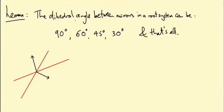Okay, I'm going to prove this lemma that I stated last time: that the dihedral angle between two mirrors in a root system can be 90 degrees, 60 degrees, 45 degrees, 30 degrees, and that's it—no other possibilities.